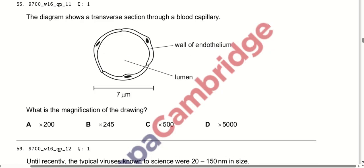The diagram shows a cross-section through a blood capillary showing the endothelium wall and lumen. The capillary is found to be 7 micrometres in diameter. What is the magnification of the drawing? Using a 5000× magnification, we can confirm the blood capillary is 7 micrometres in diameter.